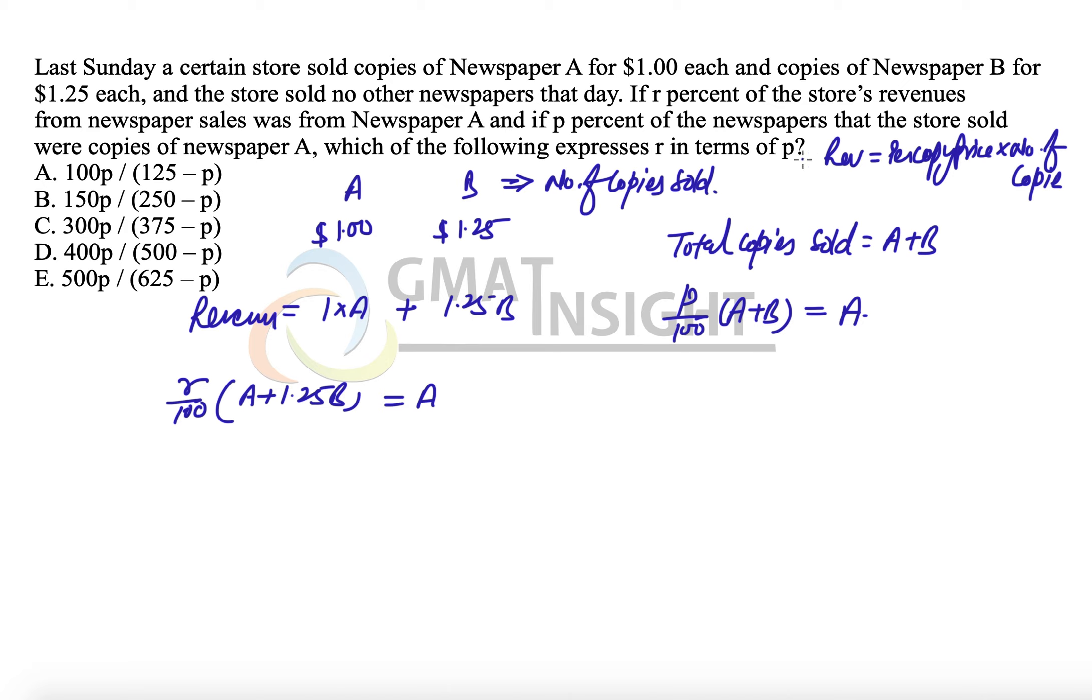Which of the following expresses R in terms of P? Now starts the major work. We need to eliminate A and B completely from these two equations because we require the answer in the form of R and P. So in order to eliminate A and B...